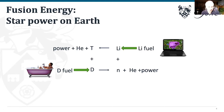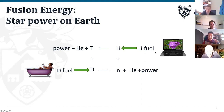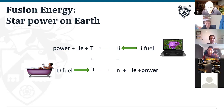Lithium is actually abundant — it's the basic element in rechargeable batteries. An interesting fact: the deuterium in half a bath of seawater and the lithium in one laptop battery together provide the basic fuels for a fusion process that could supply all of one person's lifetime electricity needs. So the fuel supply is genuinely abundant.